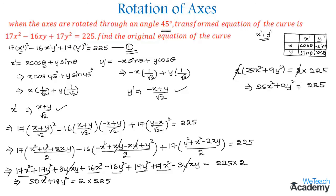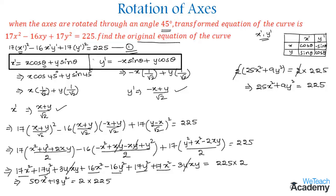So the original equation of the curve is 25x² plus 9y² equals 225. Make a note of these relations for x' and y', as the equations in this table can be easily remembered. Hope you understood the concept. For more videos, visit our website. Thanks for watching. Have a nice day.